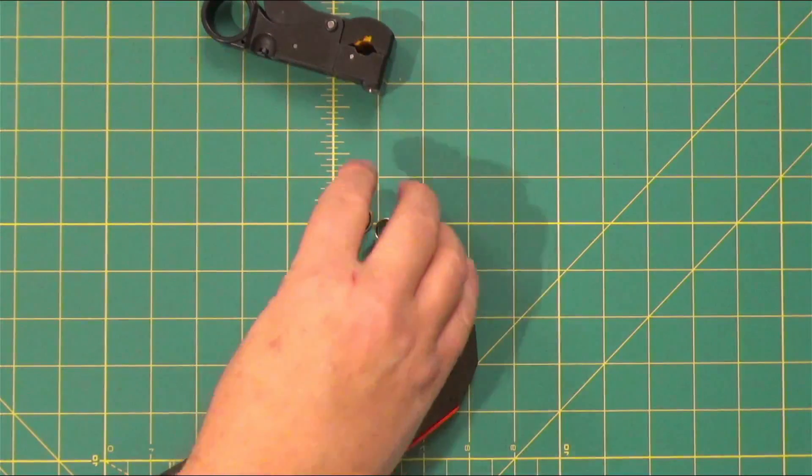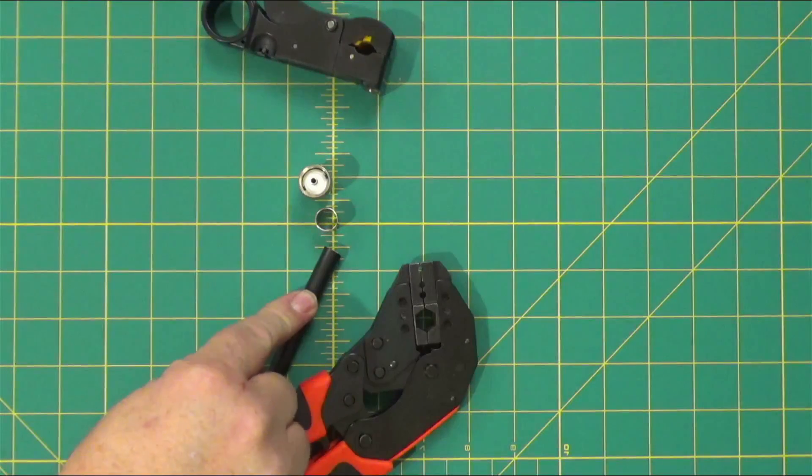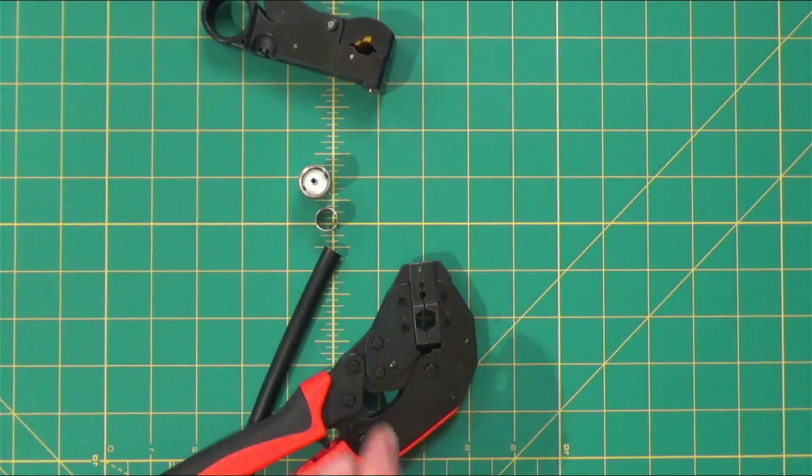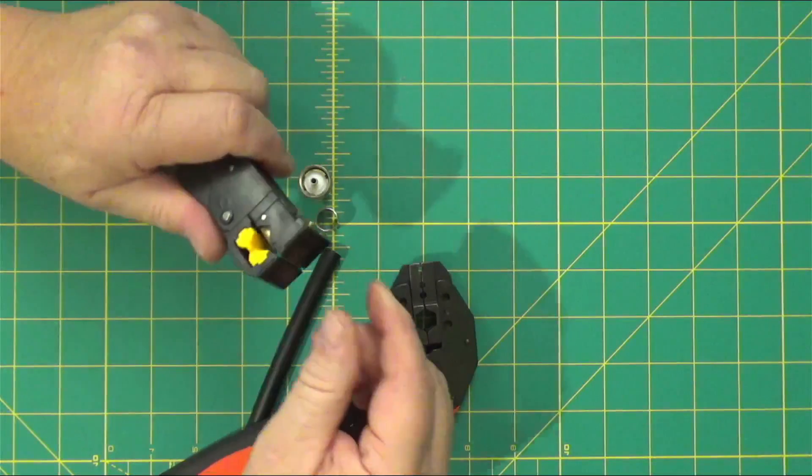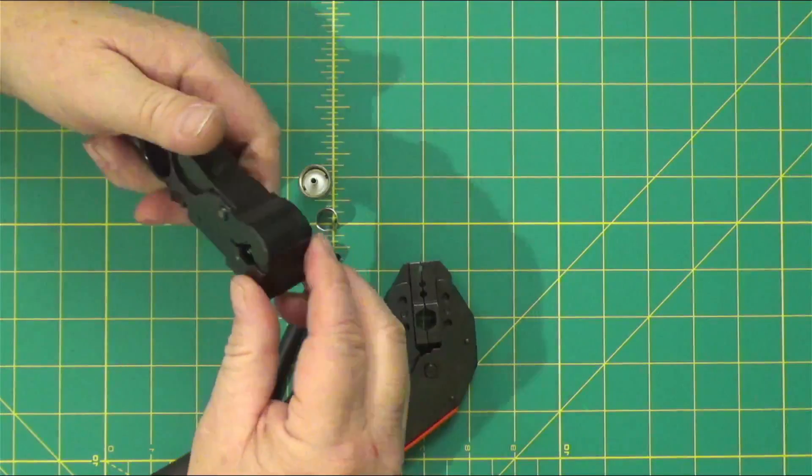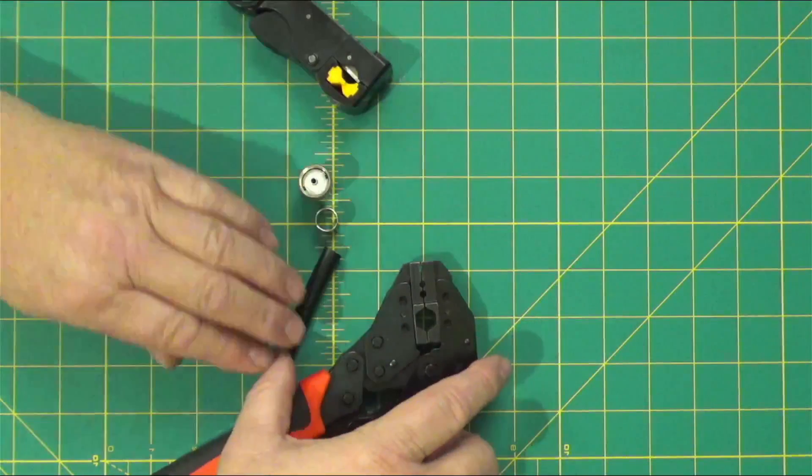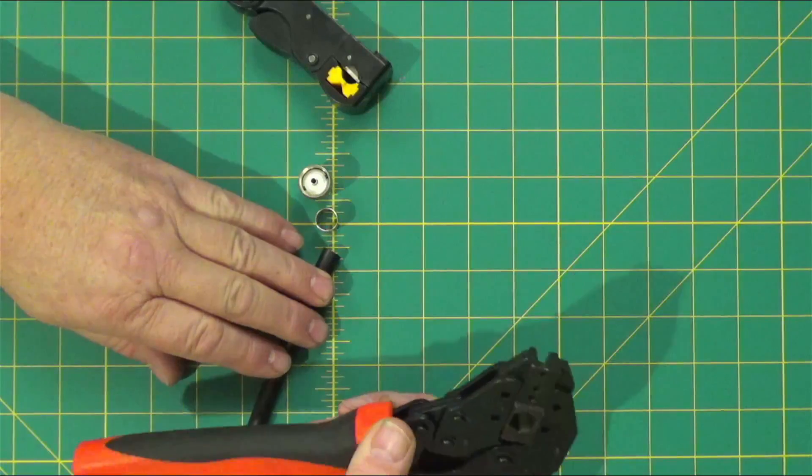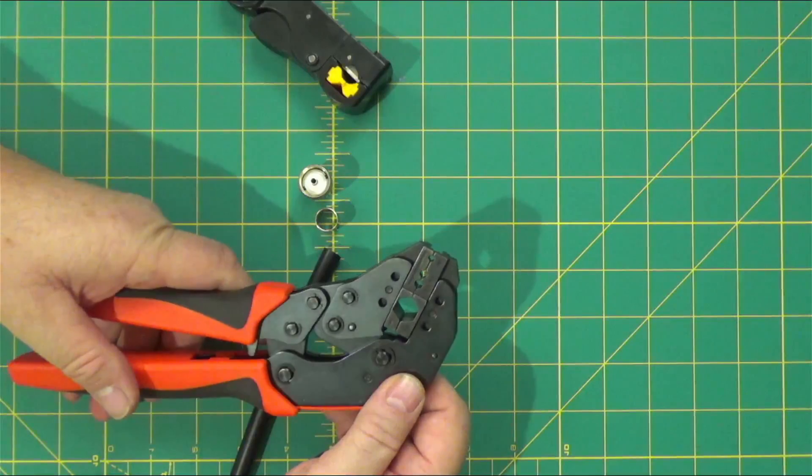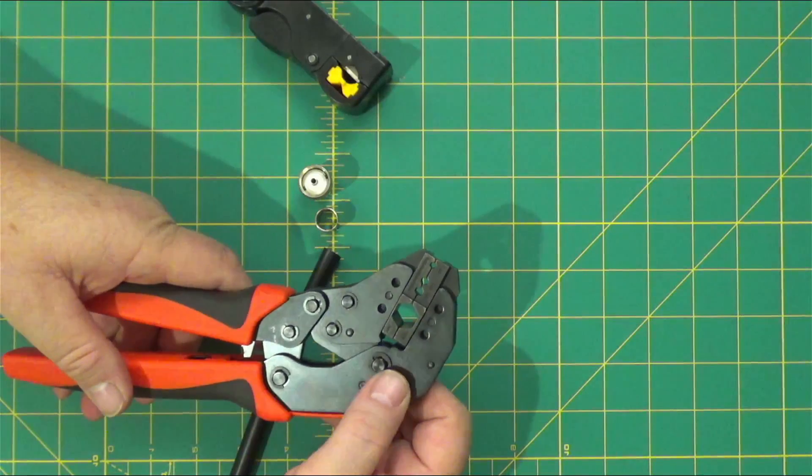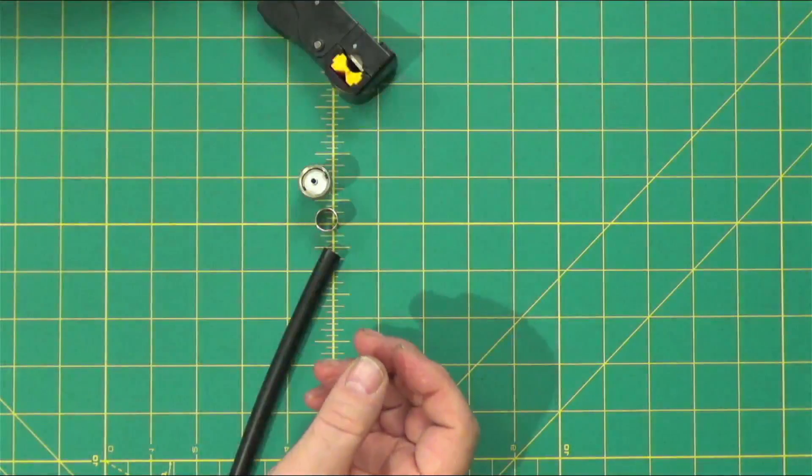Today we're going to put a PL259 on some LMR 400. What we'll need is this stripper. Put this over the end of the coax and that will take care of stripping everything you need. And then I do the clamp-on ones. I bought this from DX Engineering along with this also. So let's get started here.